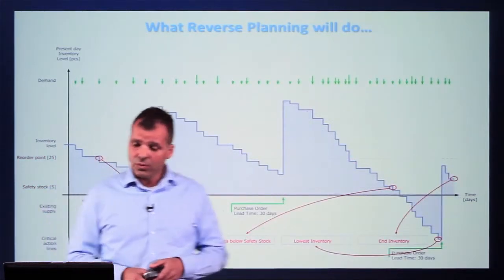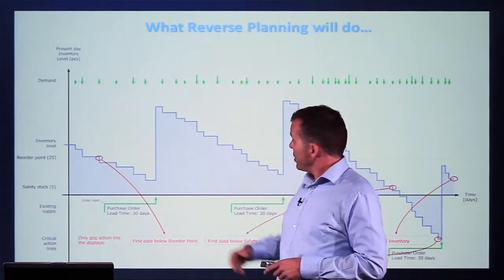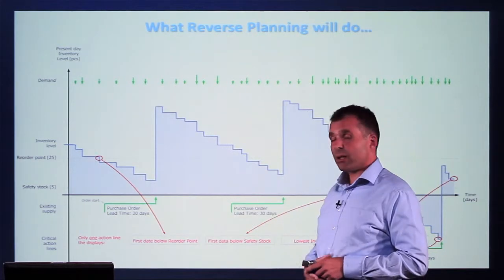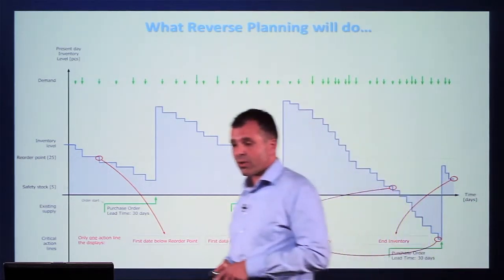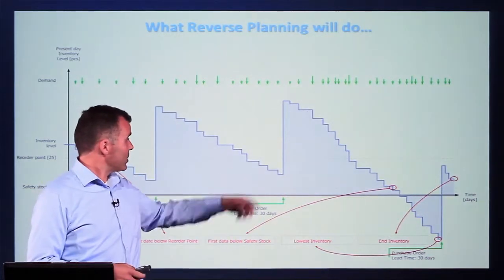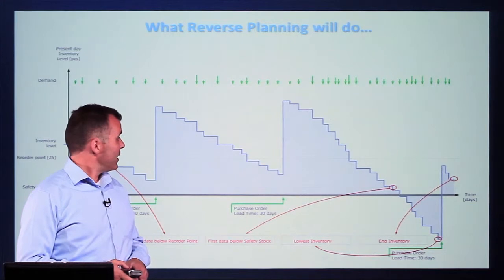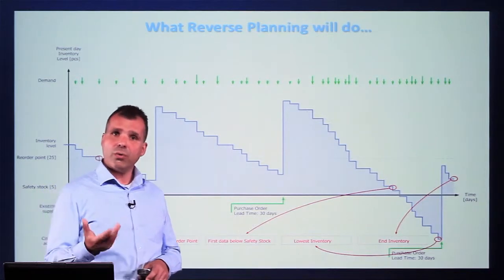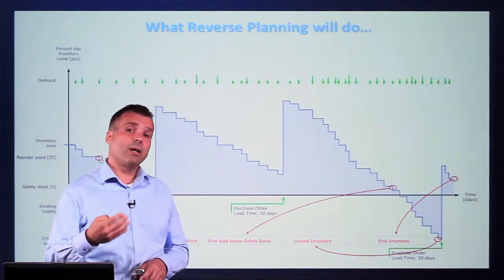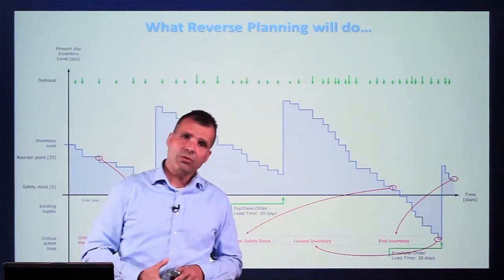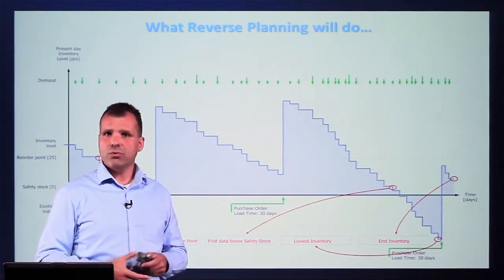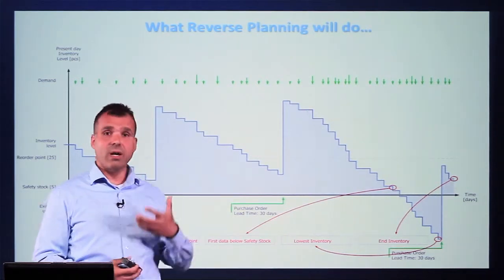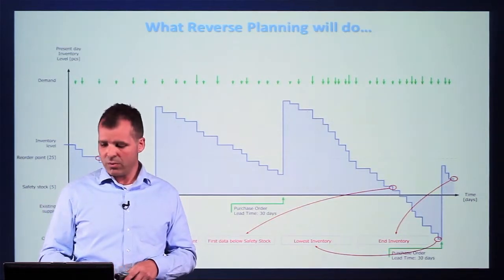With reverse planning, what we do is simply this: we measure the first day that inventory will get below reorder point and put that into a line. We also find the first day below safety stock. Then we find the lowest inventory in the measurement period and the end inventory. Those four pieces of information go into one line, and the line will only appear if inventory goes below safety stock or reorder point. The line pops up so you can see you have to do something. Based on this, you can create a new quick order using the planning journals.